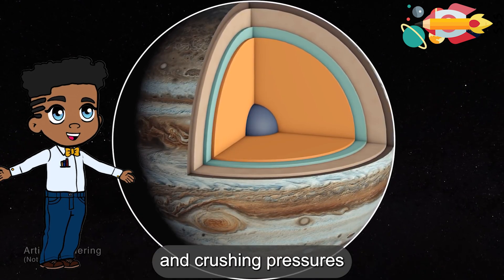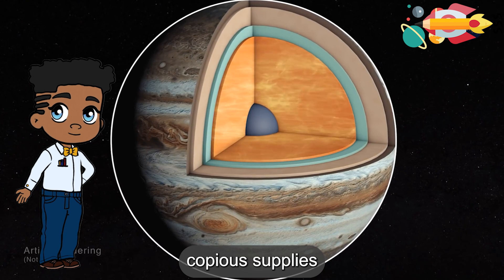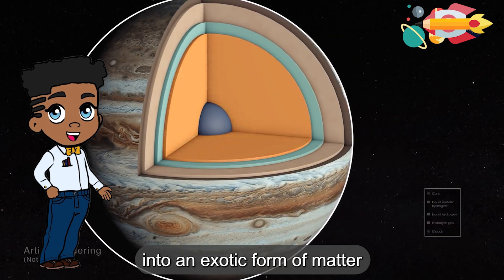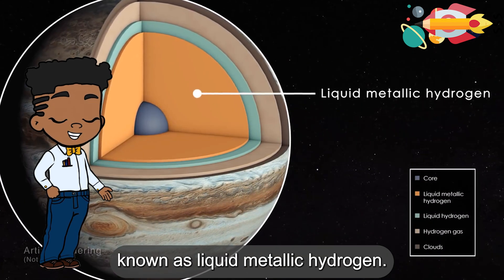Deep inside Jupiter, high temperatures and crushing pressures transform Jupiter's copious supplies of gaseous molecular hydrogen into an exotic form of matter known as liquid metallic hydrogen.